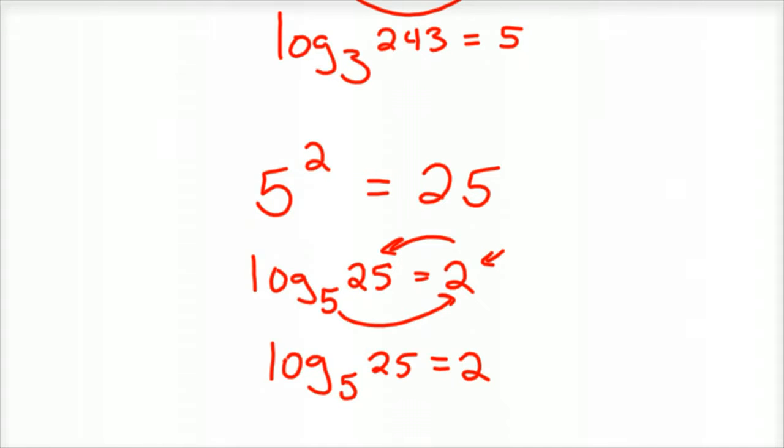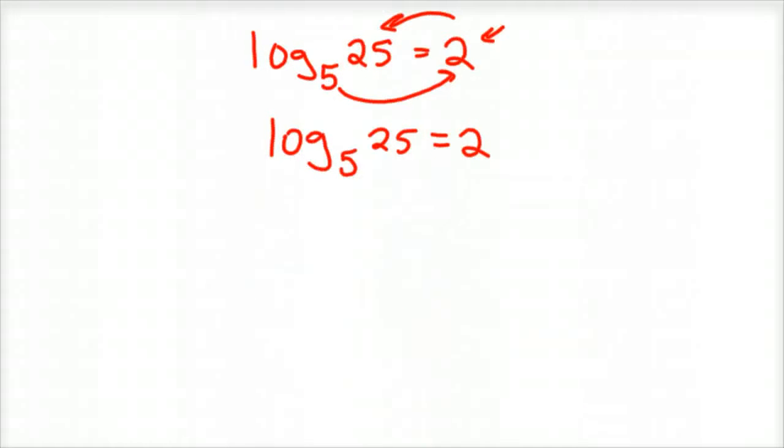Alright, so that one's down. Here's another example. So 10 to the 4th equals 10,000.